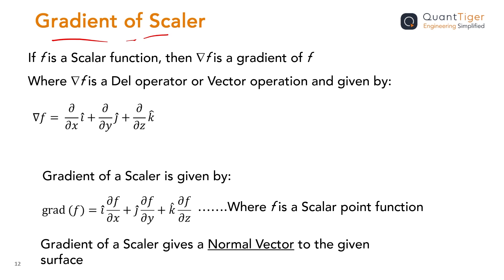So, how do we find the gradient? Let's say f is any scalar function. This symbol is called del. Del f is the gradient of f — that represents gradient, that's why we are using that symbol. Del f is a vector operation, or it's a del operator, which we use to represent the gradient of a scalar.